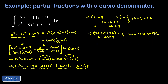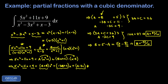Next, finding B from the simple first equation: B equals 5 minus A. Writing 5 as 50 over 10, we get B equals 50 over 10 minus 87 over 10, so B equals negative 37 over 10. For C, using the second equation: C equals 11 plus 3B. Writing 11 as 110 over 10 and subtracting 3 times 37 over 10, which is 111 over 10, we find C equals negative 1 over 10.